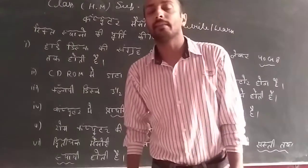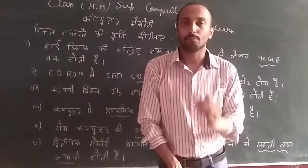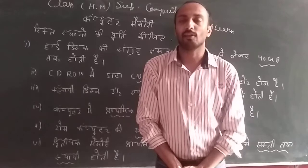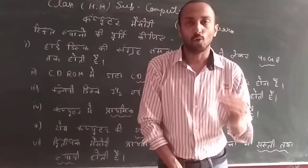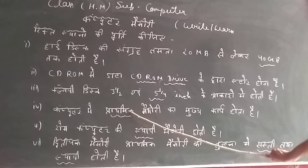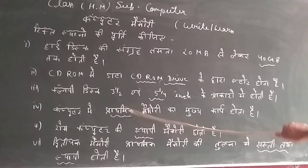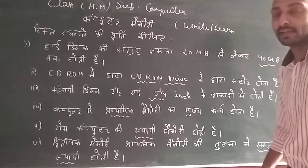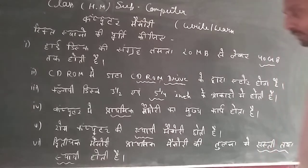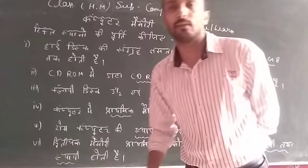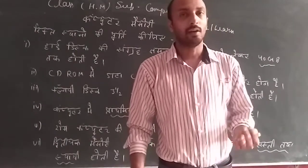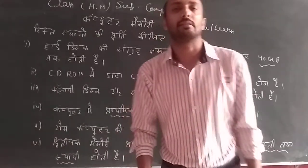In the computer, there are two types of memory: primary and secondary. Primary memory is also called core memory. We put it like a static memory. ROM is a static memory. In the computer, ROM stands for Read-Only Memory. The changes can be done in secondary memory.